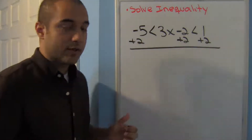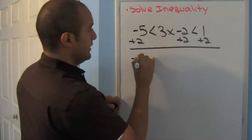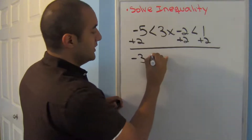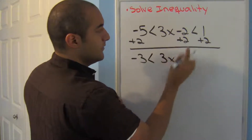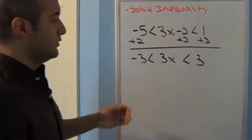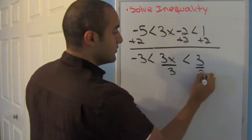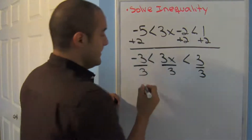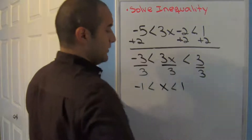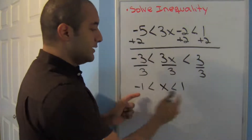I like to just go in order from left to right. Here I get negative 3 — adding doesn't change the symbol — I bring down the symbol as it is, bring down that 3x, less than 3. Then I divide by 3 on all three sides to get x by itself, and I end up getting negative 1 is less than x is less than 1.